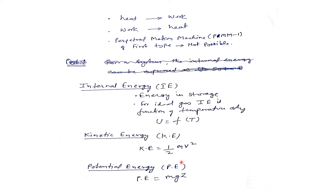So from these expressions we can estimate the total energy of the system. In the next lecture we will discuss work, because from the first law, heat is converted into work and internal energy. Internal energy can be calculated using the function of temperature, and using the equation Q = W + U, we can estimate the work output, heat input, or change in internal energy of the system from one state to another state.